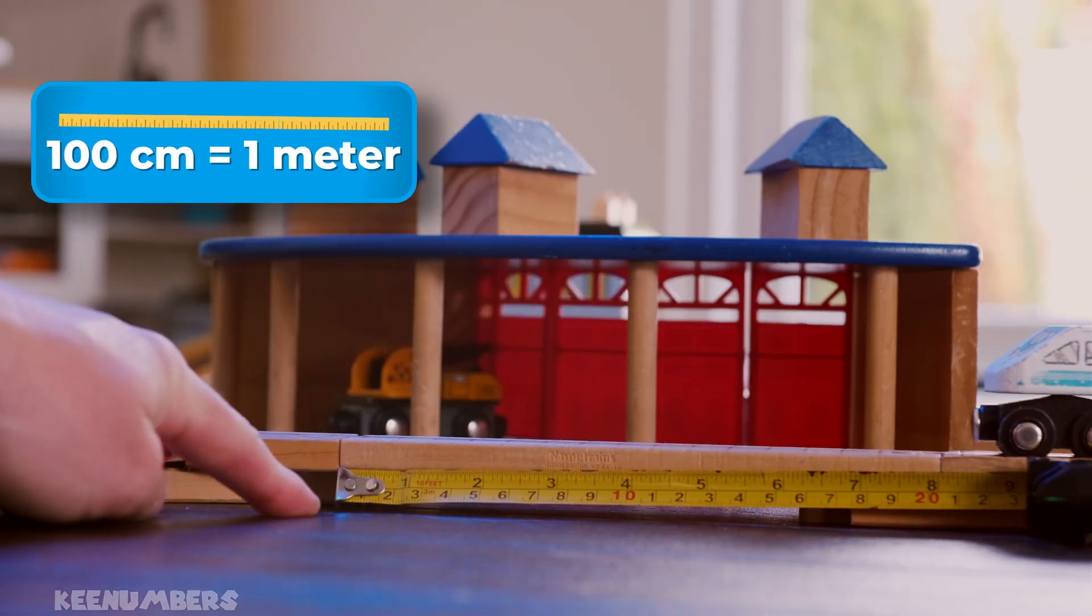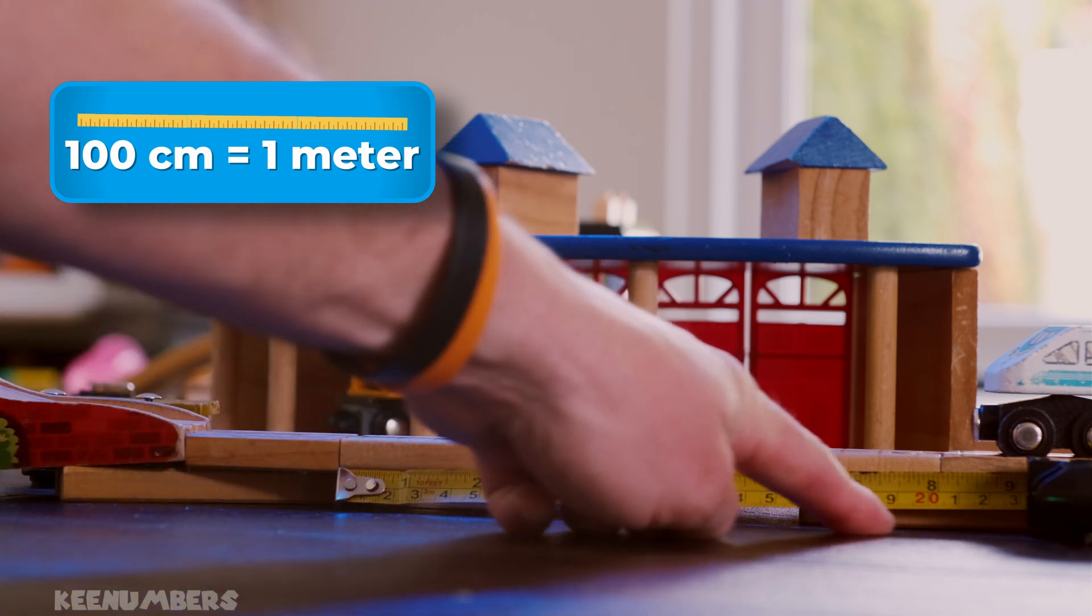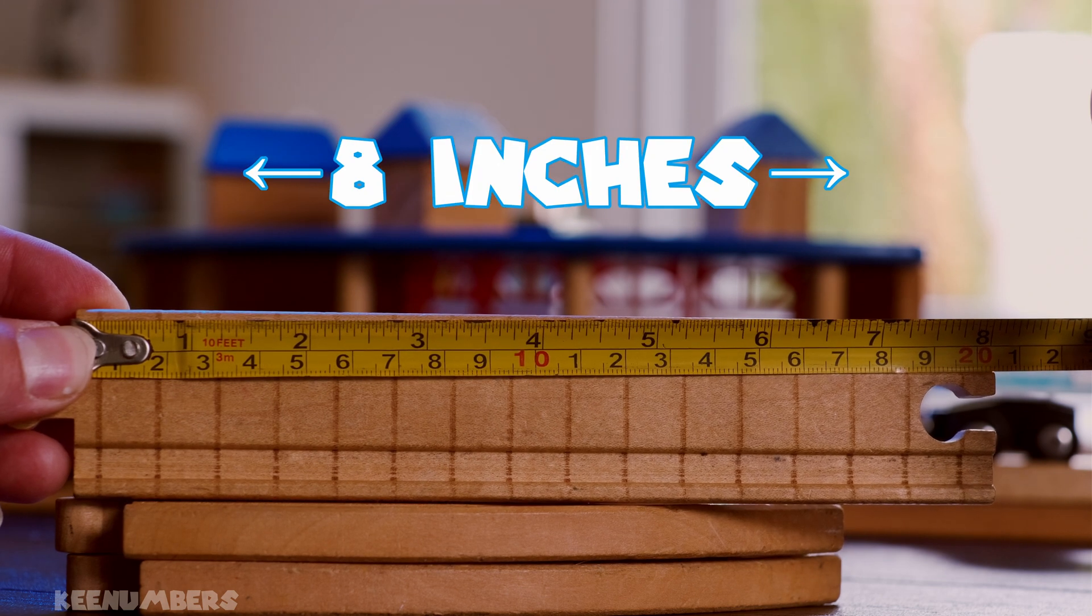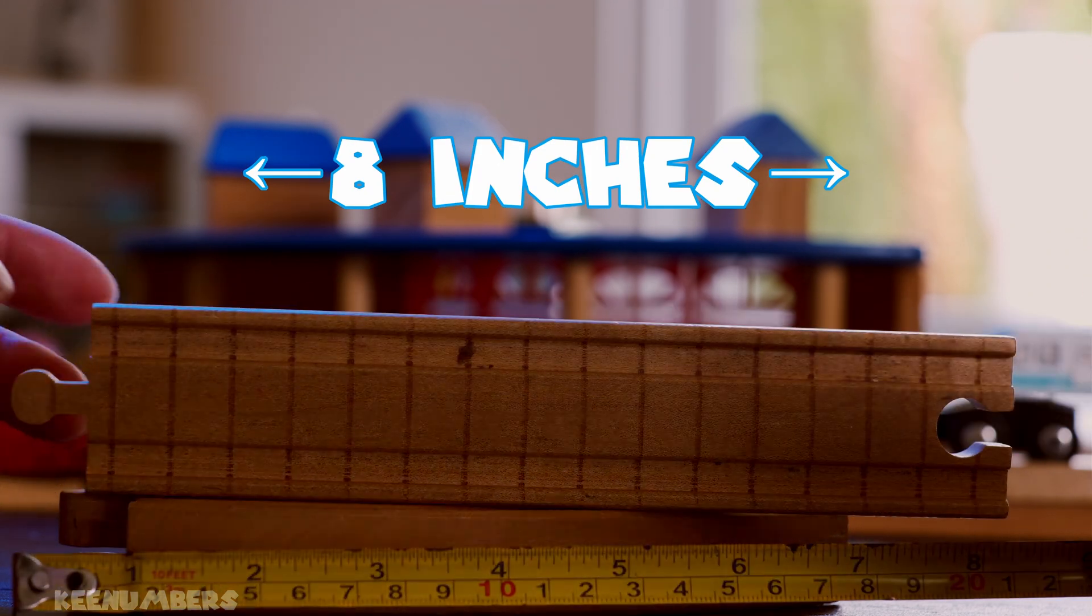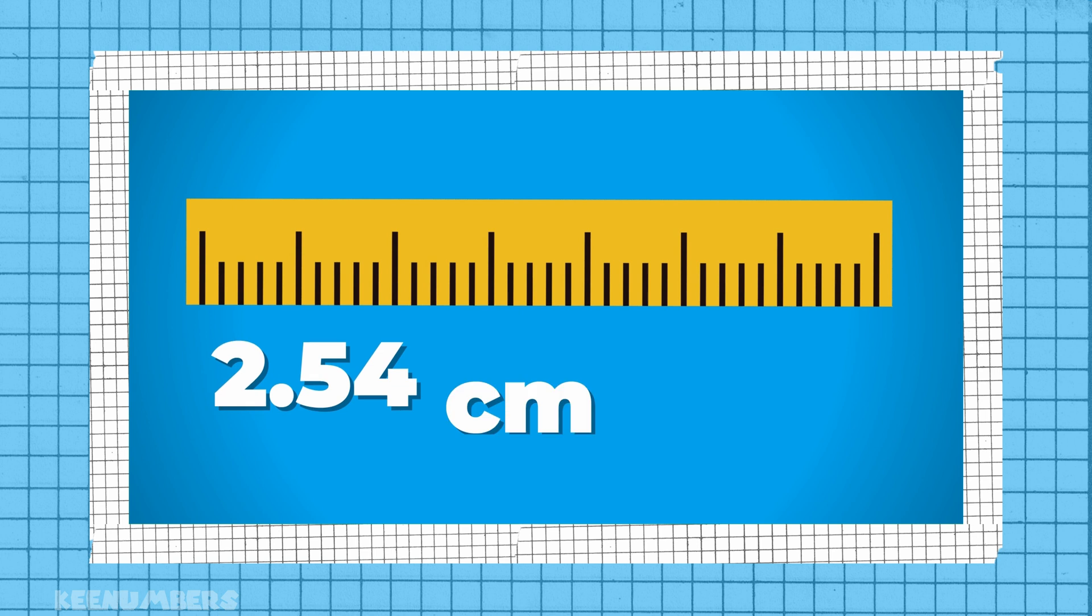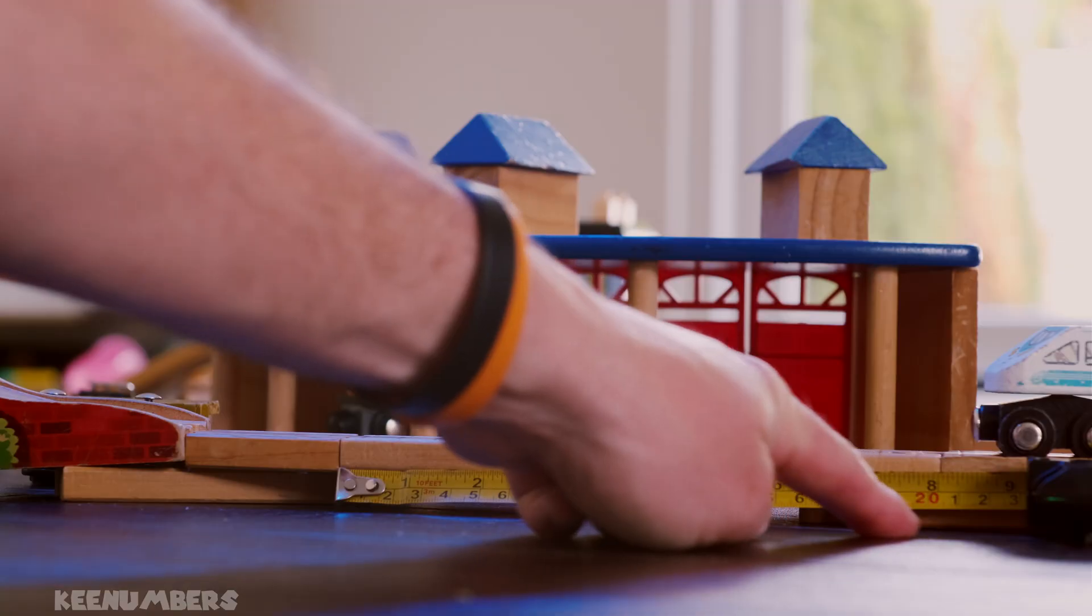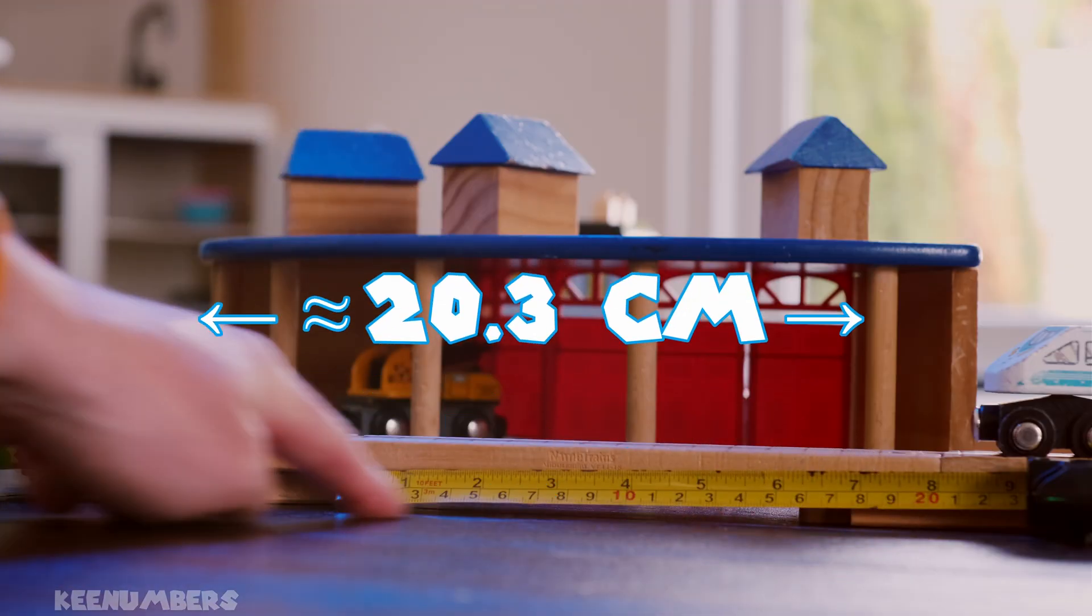There are 100 centimeters in one meter. In this example, we have eight inches of train tracks, or 20.3 centimeters, because there are 2.54 centimeters in every inch. That's how we get eight inches is equal to 20.3 centimeters.